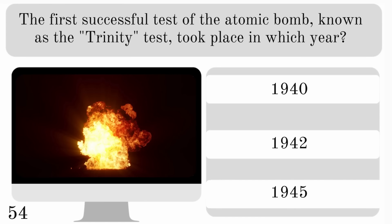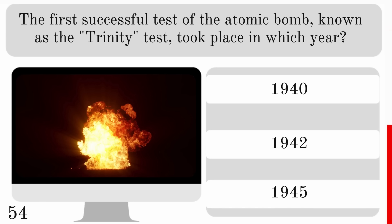The first successful test of an atomic bomb, known as the Trinity Test, took place in which year? 1940, 42 or 45? And that was in 1945.